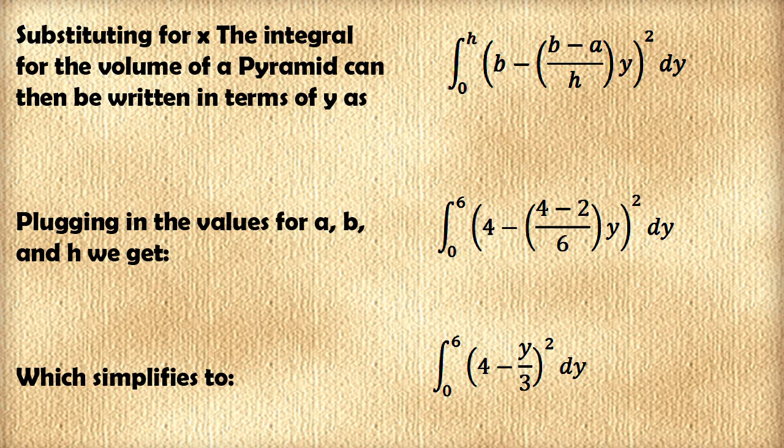Plugging in the values for a, b, and h, we get the integral from 0 to 6 of 4 minus 4 minus 2 over 6 times y, all squared dy, which simplifies to the integral from 0 to 6 of 4 minus y over 3, all squared dy.